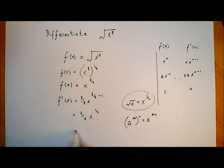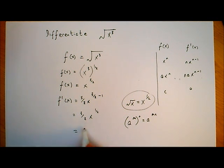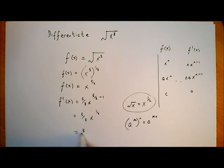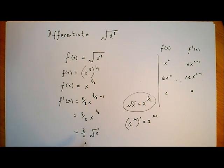If you want to write it in a different way, we know that x to the power of a half is the square root of x, so we could write three over two multiplied by the square root of x. So depending on which notation you like.